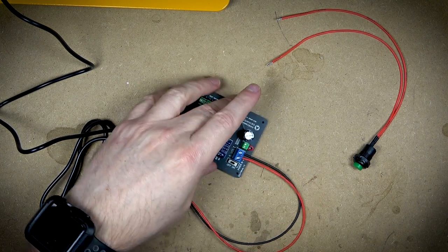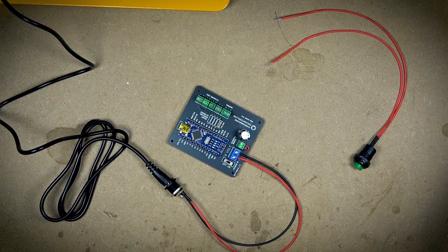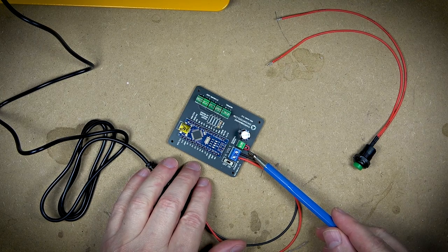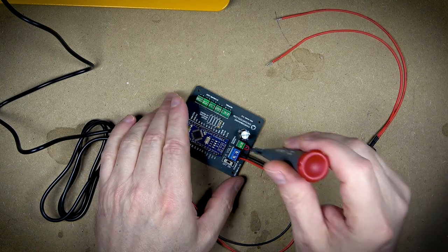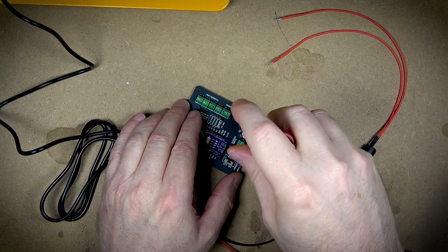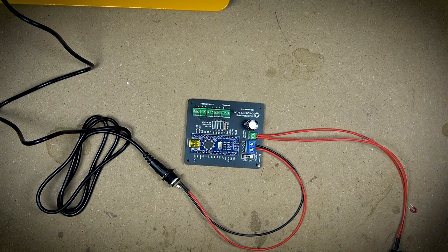Now this particular board also has the ability to have an external switch wired into it. There's a little jumper right here that I can remove, connect the external switch, and then have that work as an external extended switch away from the circuit board.